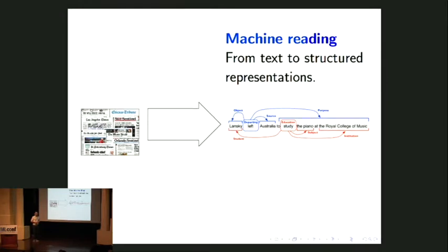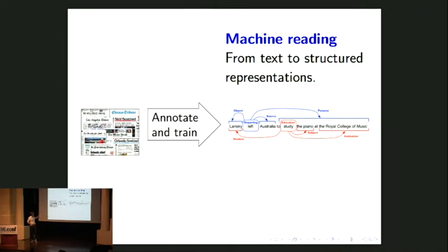This is something that for the last couple of decades we've taken a machine learning approach to. We get some labeled dataset, people annotate it — used to be linguists, now it's Mechanical Turk workers. We annotate the dataset, train a system, build a model, and apply the model to downstream data. That's the methodology we've had.